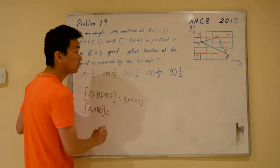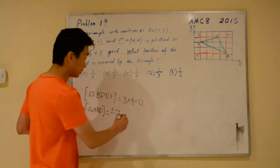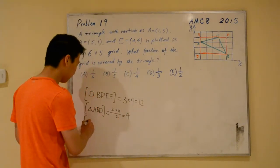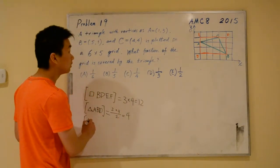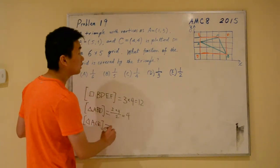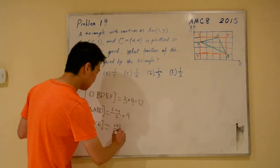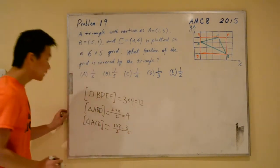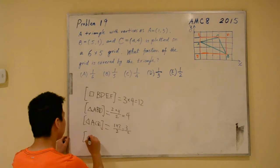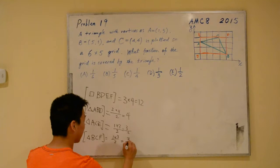And then we have area of triangle ACE. This is 1 times 3 over 2, or 3 halves. And finally, we have triangle BCF. This is also 1 times 3 over 2, which equals 3 halves.